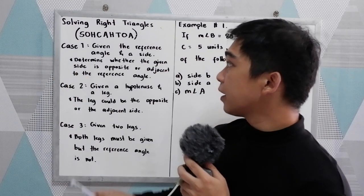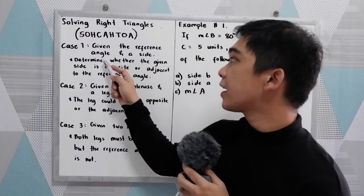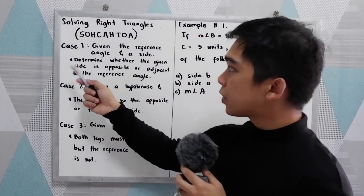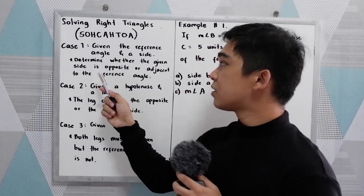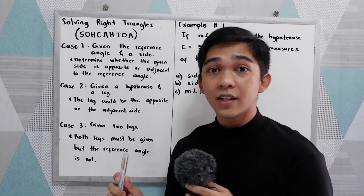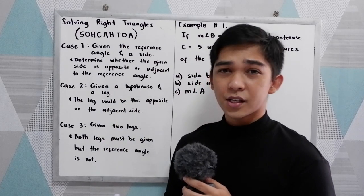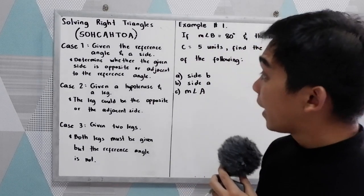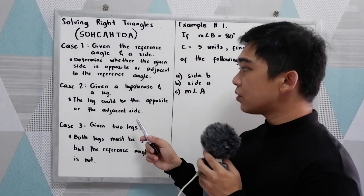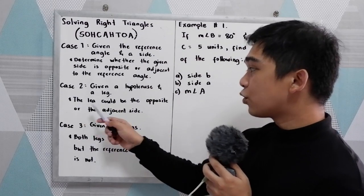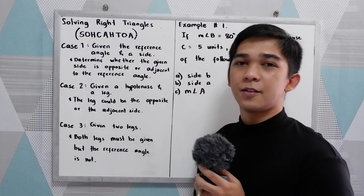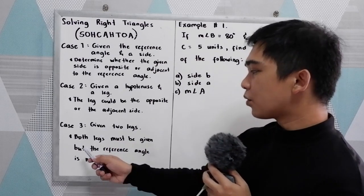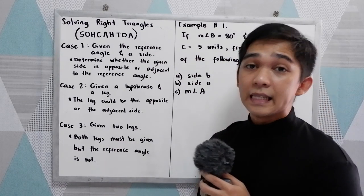Case one: if the given is the reference angle and a side. If that is the case, first we need to determine whether the given side is the opposite side or the adjacent side to our reference angle, or determine whether it is the hypotenuse. Case number two: given a hypotenuse and a leg — the leg could be the opposite side or the adjacent side. And case number three: given two legs, so both legs must be given but the reference angle is not.